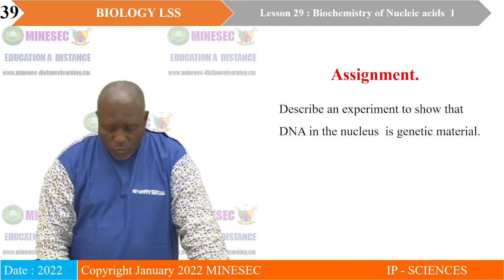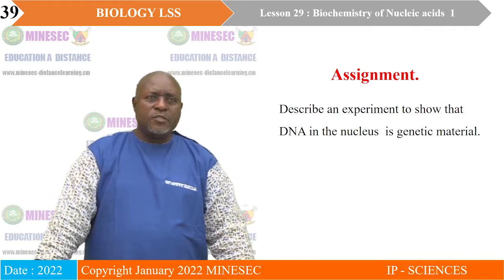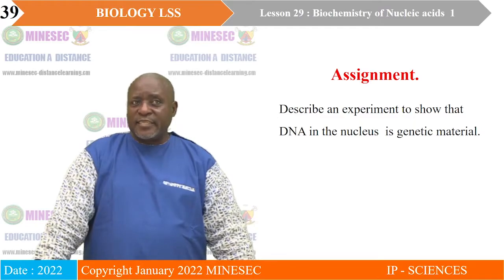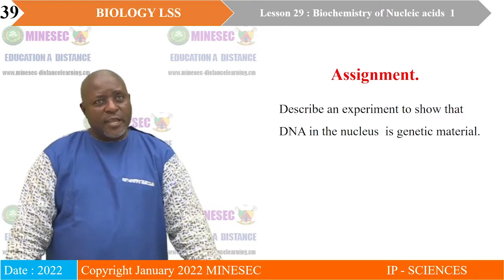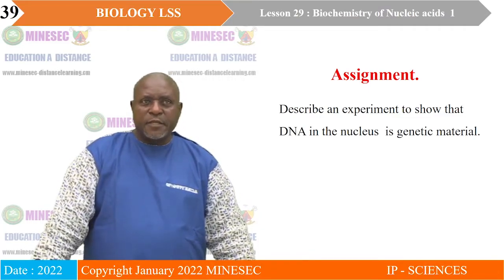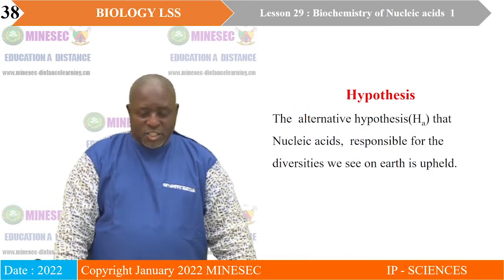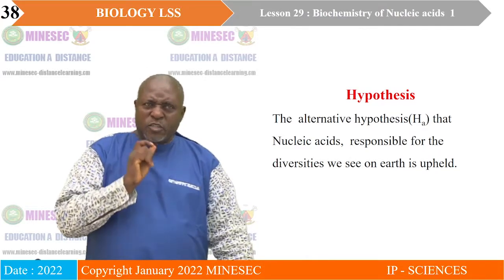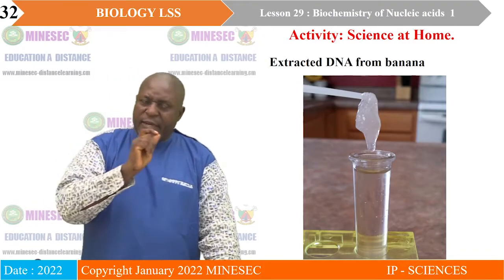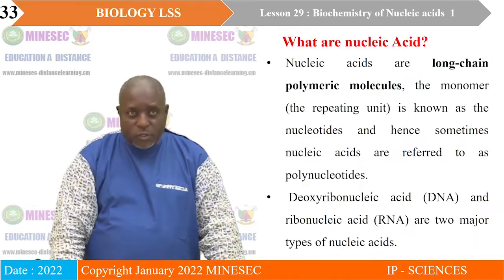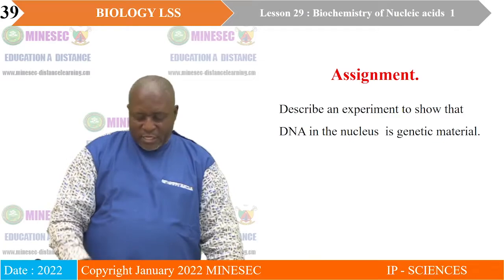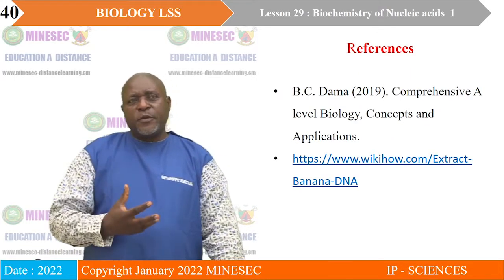Now let us go back to our assignment. The assignment for today will be to describe an experiment to show that DNA in the nucleus is genetic material. It is going to be an exciting experiment, and we are going to use an organism you will come to know for the first time — an alga called acetabularia. We are going to see the acetabularia experiment in the next class, but I want you to read in detail about acetabularia. DNA is genetic material, and the hypothesis that DNA is responsible for the diversity we see is true. You can get the acetabularia experiment from a comprehensive A-level biology concept application or from WikiHow — how to extract nucleic acids from banana.